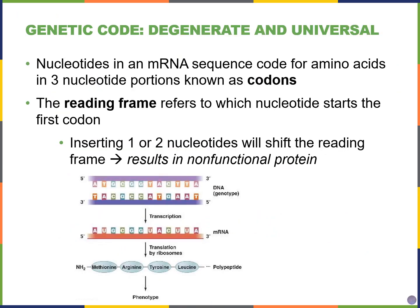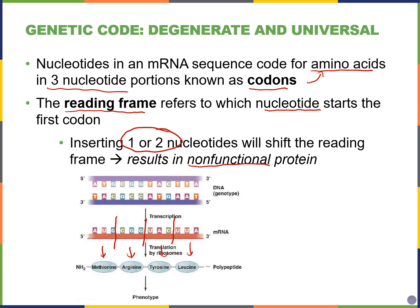The reading frame is very important when translating messenger RNA into proteins, because it tells us which nucleotide to start the first codon with. Every three nucleotides generates each amino acid. If a mutation causes extra nucleotides to be inserted or deleted, that would shift the reading frame and result in a non-functional protein, because the correct amino acids would no longer be laid down.